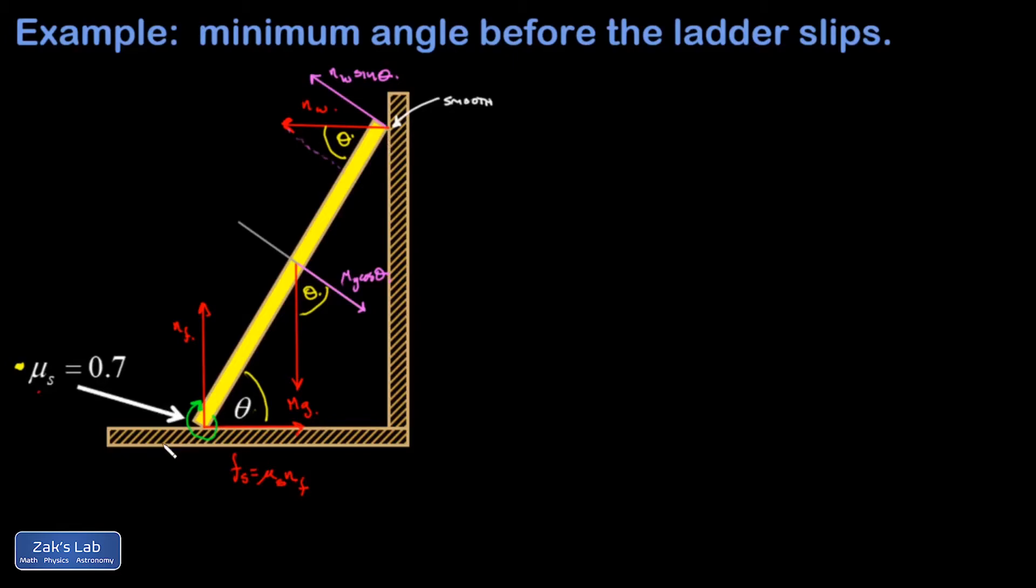Now we weren't given the mass of this thing and we weren't given the length, and I would assume that those things cancel out, so I'm just going to call them m and l for now and let's get into our torque analysis. This thing is in static equilibrium so the sum of all the torques must be zero.